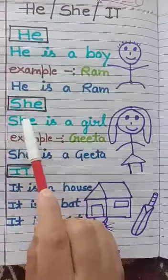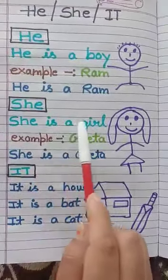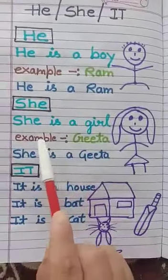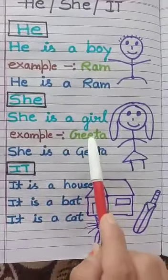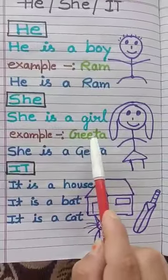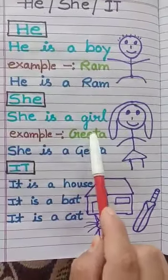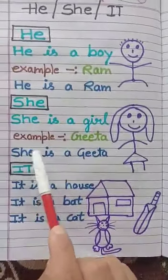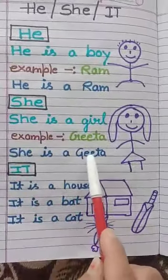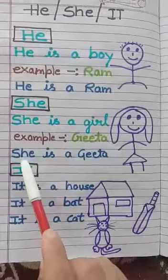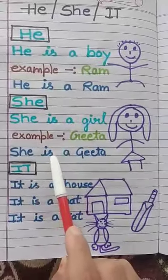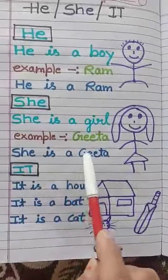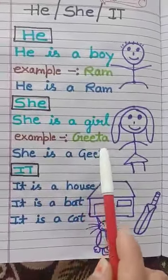For example, Gita. Gita is the name of a girl. So, she is Gita.